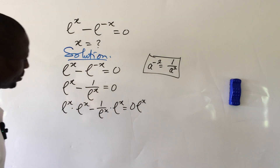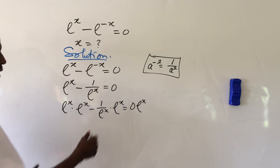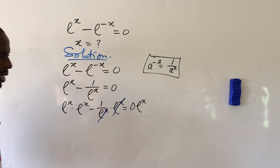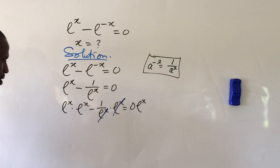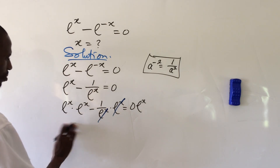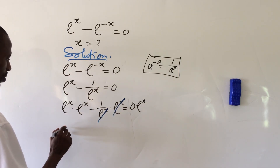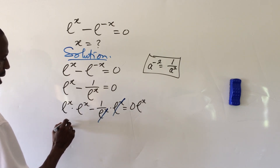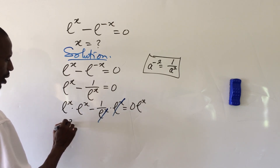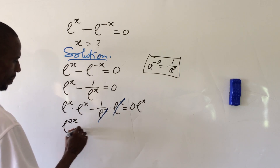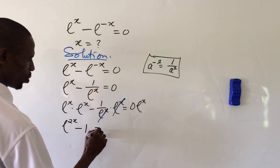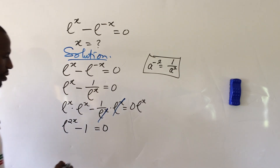If we do that, we're going to have e to the power of x times e to the power of x minus 1 all over e to the power of x times e to the power of x equal to zero times e to the power of x. The denominator cancels, and zero times anything gives us zero. So we now have e to the power of 2x minus 1 equal to zero.